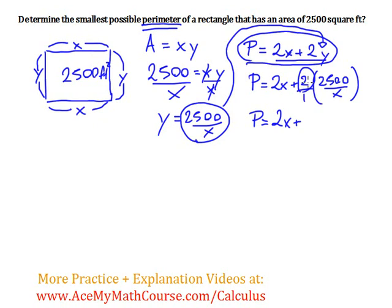We're multiplying fractions, top, top, bottom, bottom. So 2 times 2,500, 5,000. 1 times x is just x. Now what do we need to do?